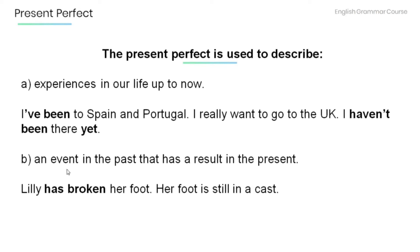An event in the past that has a result in the present. For example, Lily has broken her foot — her foot is still in a cast. Past event: Lily has broken her foot. Result in the present: her foot is still in a cast.